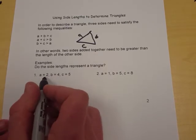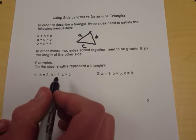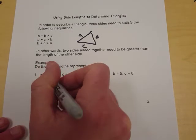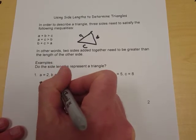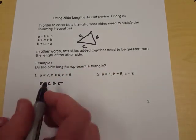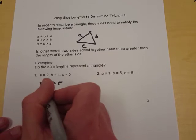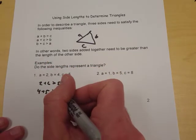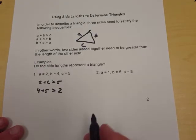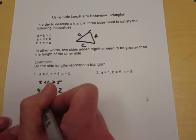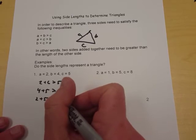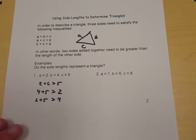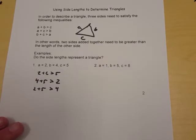If I've got this first example with two, four, and five: two plus four is greater than five. Four plus five is greater than two. And then two plus five is greater than four. So if all those inequalities hold true, then we can actually have a triangle.